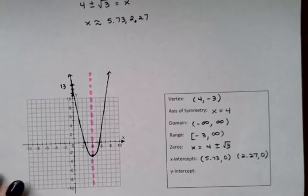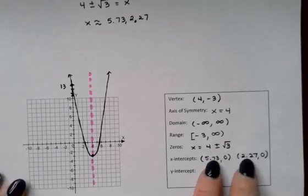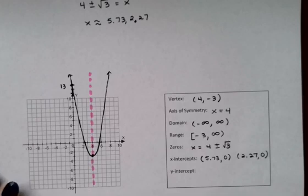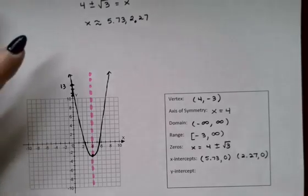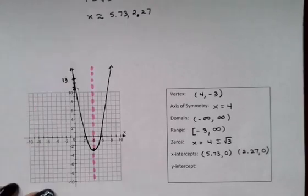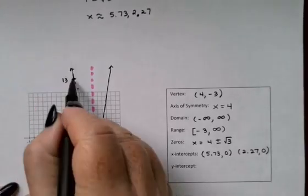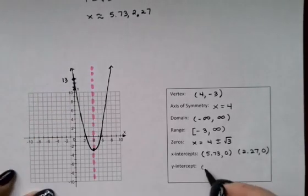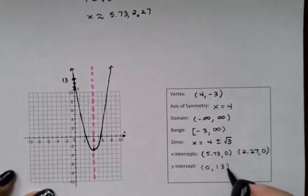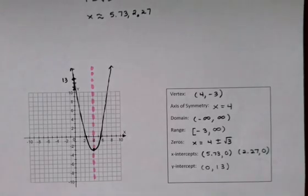That was just a choice that I chose to use the exact value here and the decimal approximations there. When you're doing homework in MyMathLab and so on, they always tell you what they want, so just read carefully. Finally, the y-intercept was up here at 13, so x = 0, y = 13. And there's the information and the graph for that function.